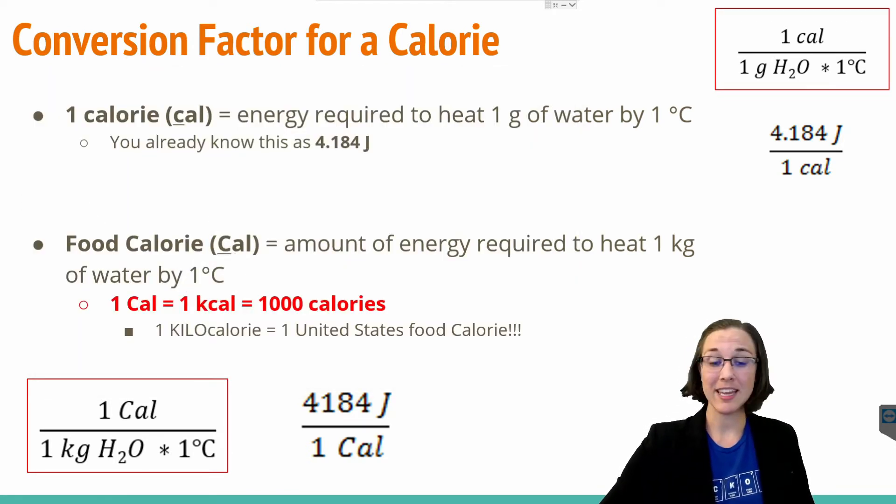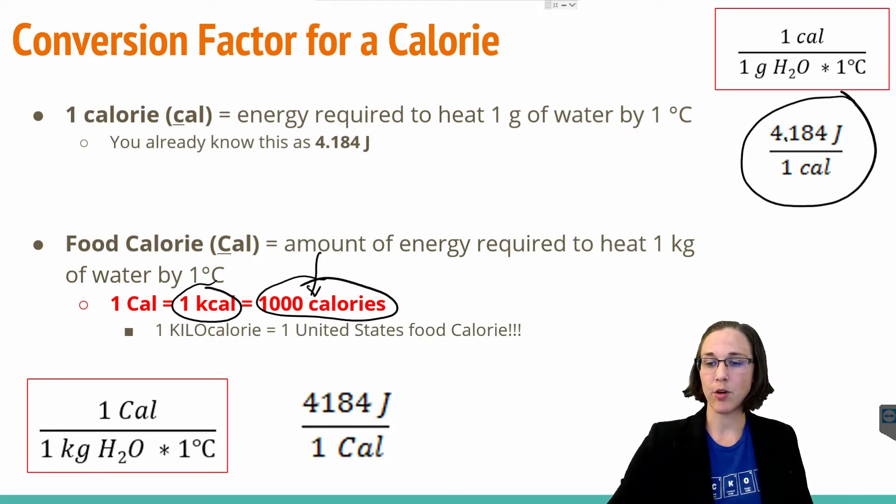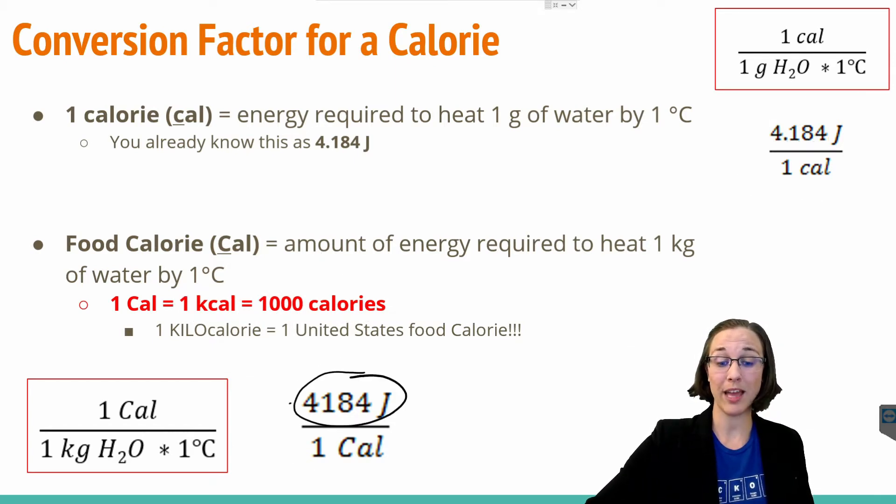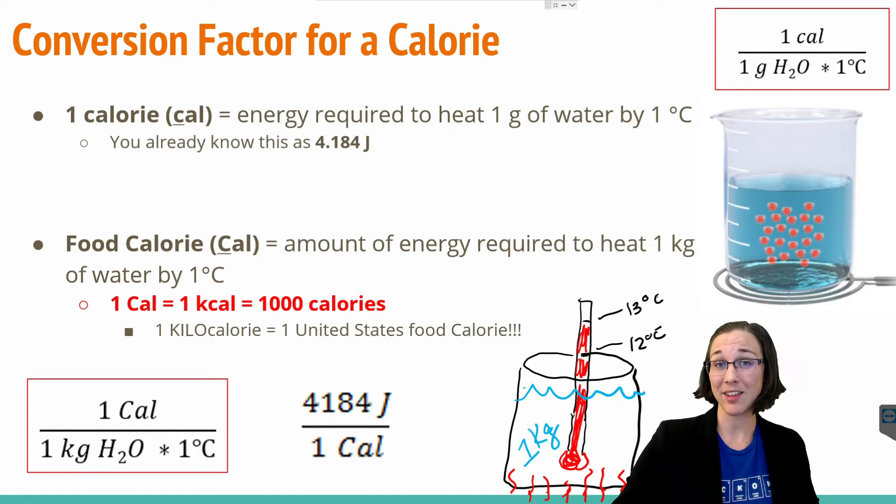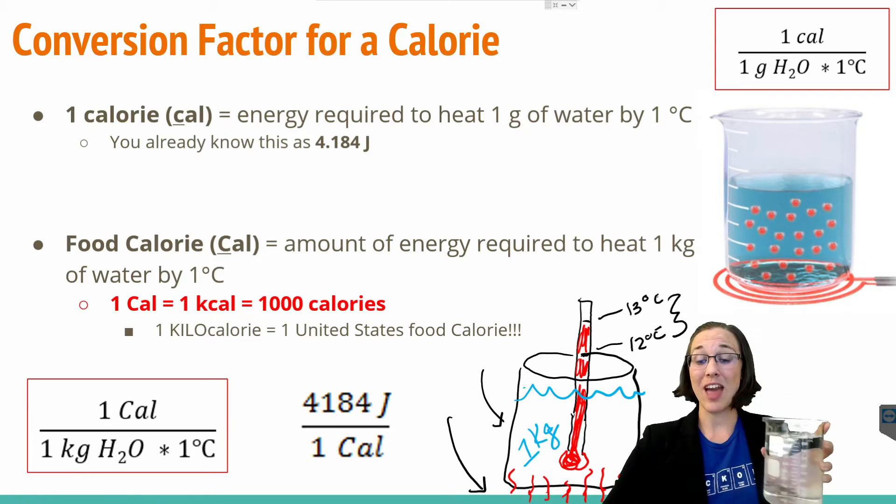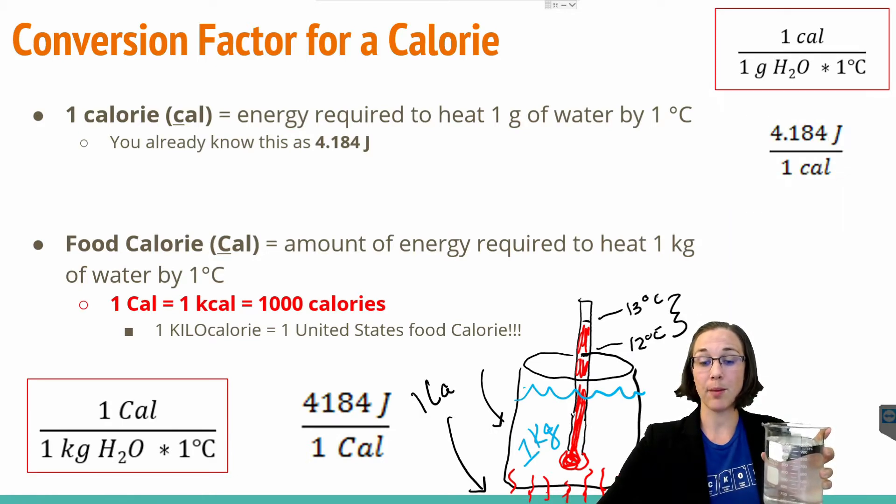Since one uppercase calorie is equivalent to one kilocalorie, which is 1,000 lowercase calories, we can just manipulate our previous conversion factor and move it over three spaces for the 1,000 lowercase calories to end up with a conversion factor of 4,184 joules per one uppercase calorie. So that's a lot of energy per one food calorie. And there's not many things out there that only have one calorie. Another way we can represent this uppercase calorie is by saying if we heated up one kilogram of water enough so that it changed one degree Celsius, now remember one kilogram of water is a lot of water, that would be equivalent to the heat energy for one big uppercase C calorie.